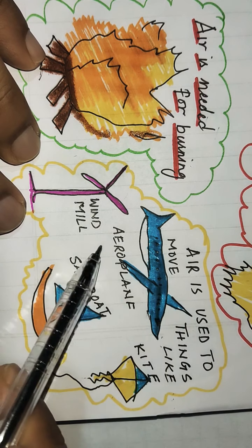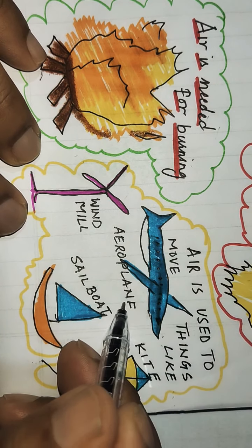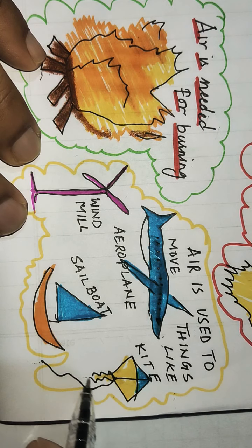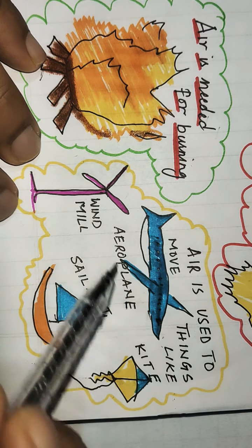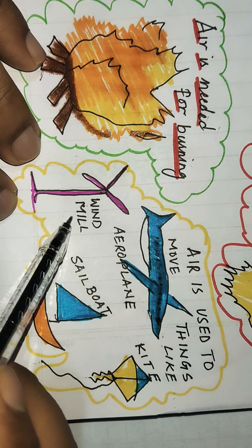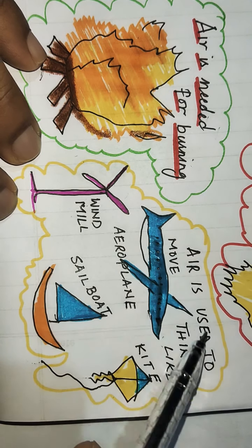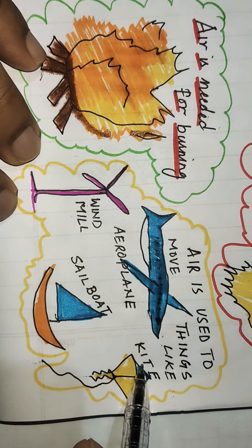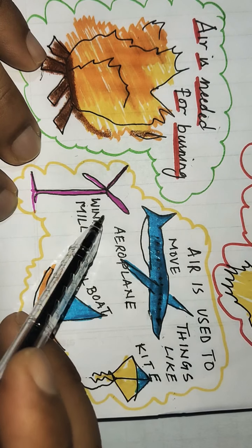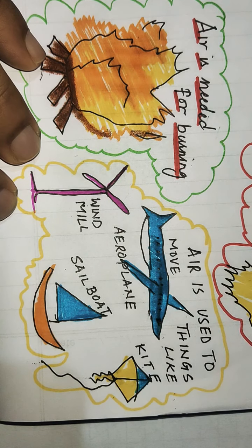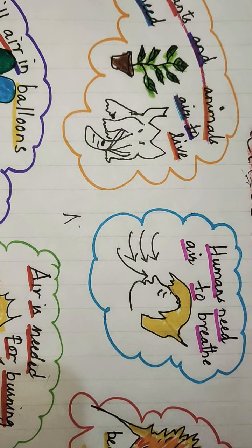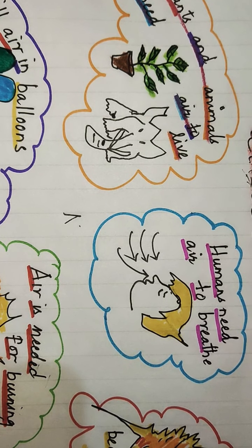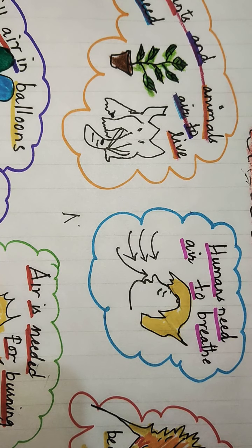Next, air is used to move things like airplanes, kites, sailboats, and windmills. I hope that you have understood the need of air.